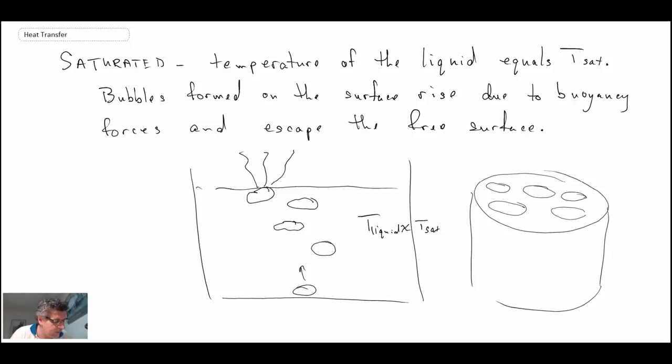So what we're going to do in the next segment, we're going to take a look at the boiling curve. And this is something that is used quite often in terms of understanding what regime we're in and what types of heat fluxes we could anticipate for the boiling heat transfer processes that we might be studying. So that's where we're going.